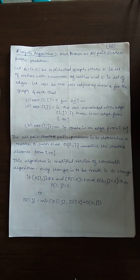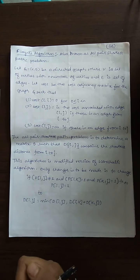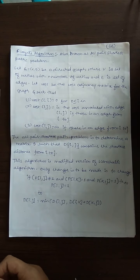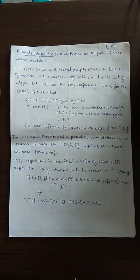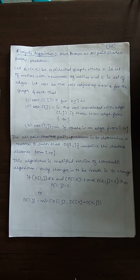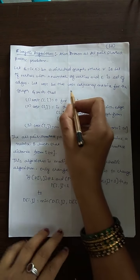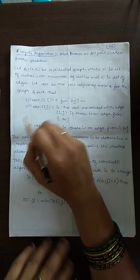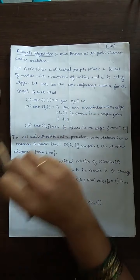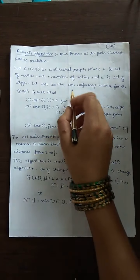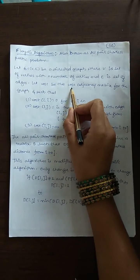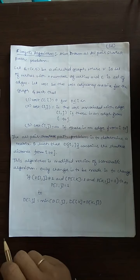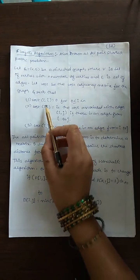All pair shortest path means: if we consider one vertex, what is the shortest path from that vertex to all other vertices? That will be given by Floyd's algorithm. Here we will be given a graph G of V and E, where V is the set of vertices and E is the set of edges. It is a directed graph. For that graph we are going to write the cost adjacency matrix. In Warshall's algorithm we had only the adjacency matrix, but here we will be having the cost adjacency matrix for that graph.